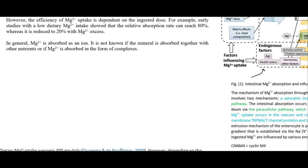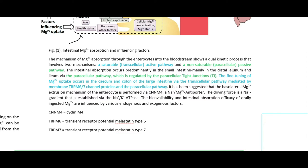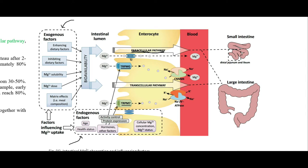To summarize the pathways: there is a saturable transcellular active pathway and a non-saturable paracellular passive pathway. The paracellular pathway is regulated by tight junctions and is the primary route in the small intestine. Fine-tuned magnesium uptake occurs in the cecum and colon via the transcellular pathway - so TRPM6 and TRPM7 are primarily used in the large intestine.